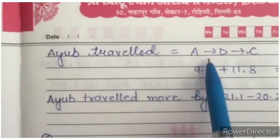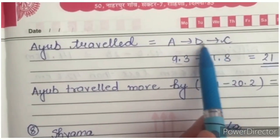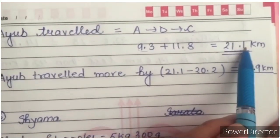Similarly, we will go for Ayub also. Ayub travelled A to D and then D to C. Distance between A to D is 9.3 km and distance between D to C is 11.8 km. Add these two. You will get 21.1 km.